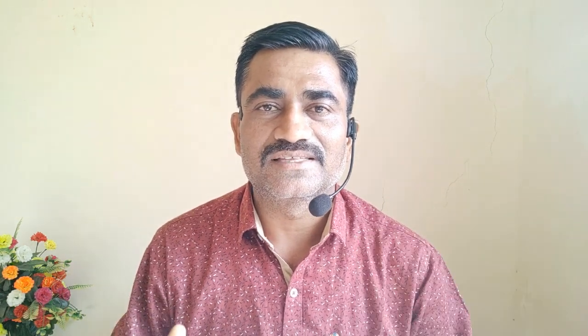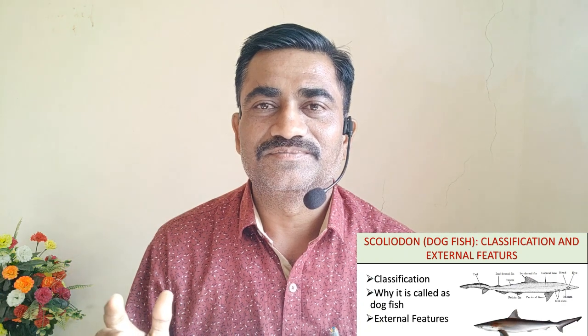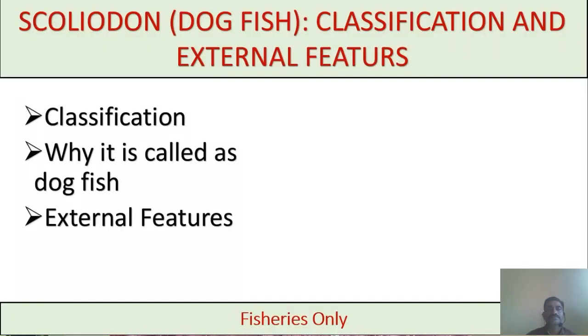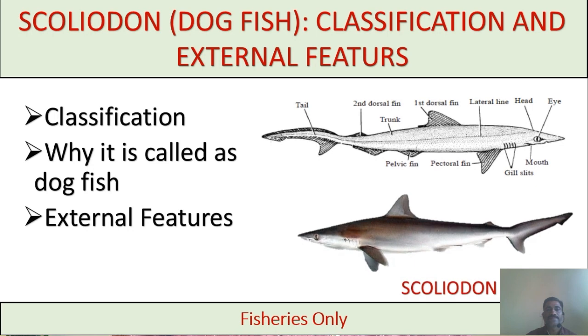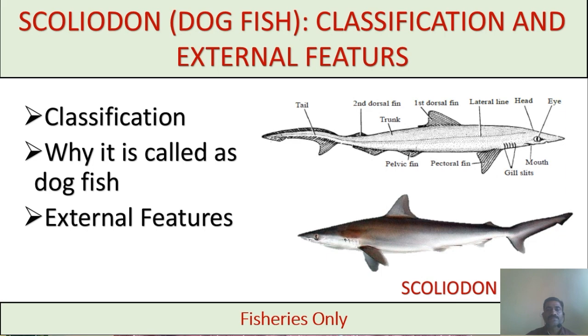In this video we are going to discuss the classification and external features of the Scolidon. Scolidon is an elasmobranch fish which inhabits the open sea. It is 30 cm to 60 cm in size and it is a carnivorous fish. It is commonly called a dogfish — it is called dogfish because it can smell like a dog.